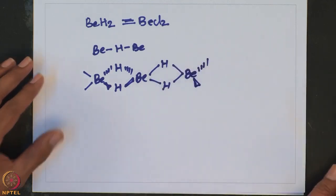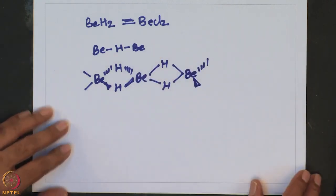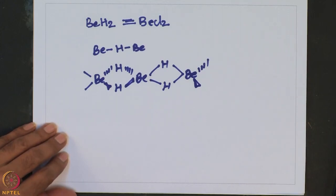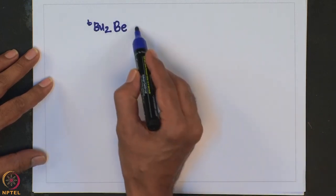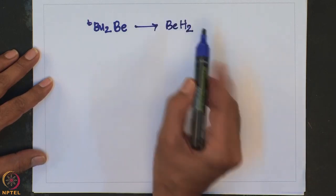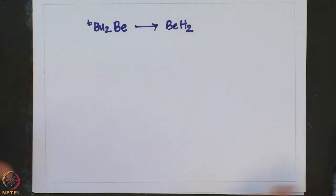A similar structure can also be shown for beryllium chloride in the solid state. Now let us look into the decomposition of di-tert-butyl beryllium and how it gives beryllium hydride. We should discuss the kinetic pathway available for the decomposition of alkyl beryllium to give beryllium hydride. This pathway is called beta-hydrogen elimination.